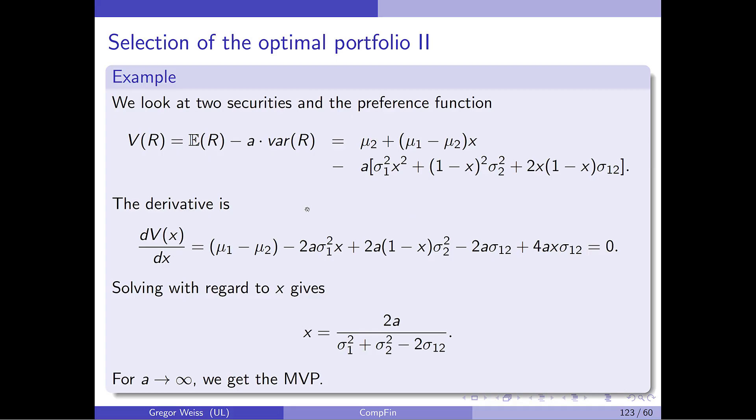So this is the covariance and this is the standard formula from general statistics on the volatility, or rather the variance in this case, of a linear combination of two random variables. In this case, it's a convex combination of two securities. We take the first derivative with respect to x. The first derivative is given by this rather long equation. We set it equal to 0 and then solve for x, just as we would have done in high school, and we get x equal to 2a divided by variance plus variance minus two covariance. And if we now let a go to infinity, we actually can see that we get the minimum variance portfolio. So if we have infinite risk aversion, we get the minimum variance portfolio.